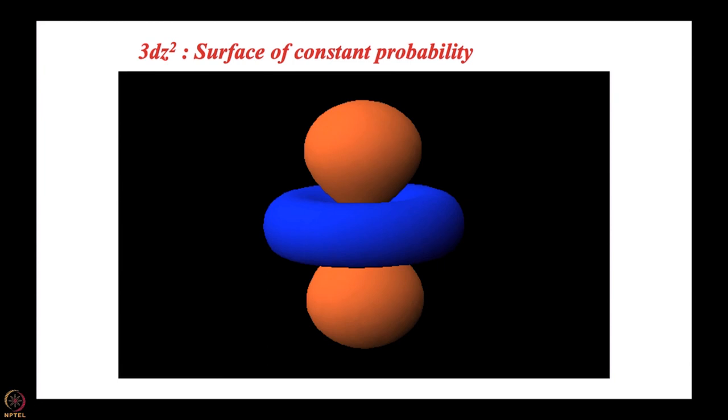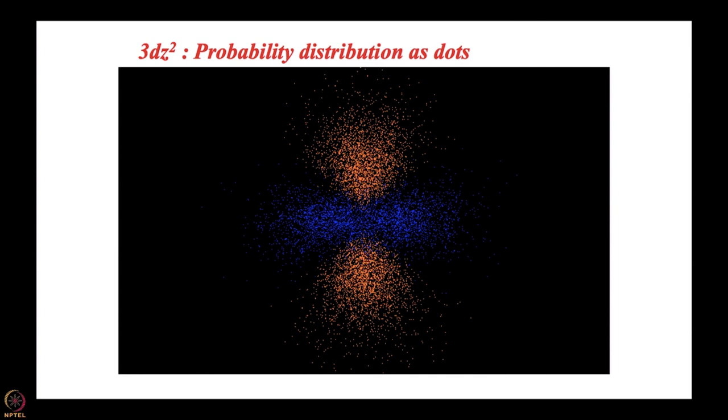Once again, you can work out the surface of constant probability. These are the angular nodes shown with surface, and this is how you can show probability distribution as dots.